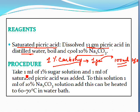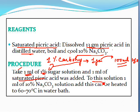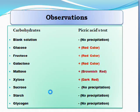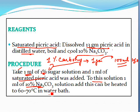For the procedure: take 1 ml of 1% sugar solution, add 1 ml of saturated picric acid solution, then add 1 ml of 10% sodium carbonate solution. Heat the mixture at 60 to 70 degrees centigrade for some time.